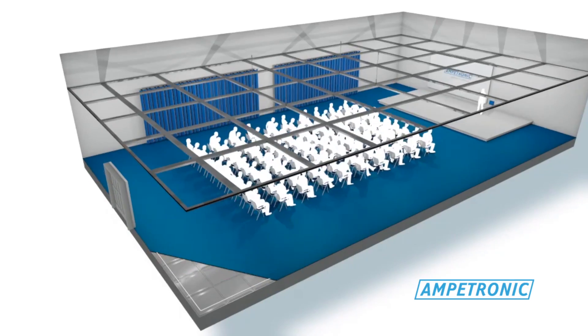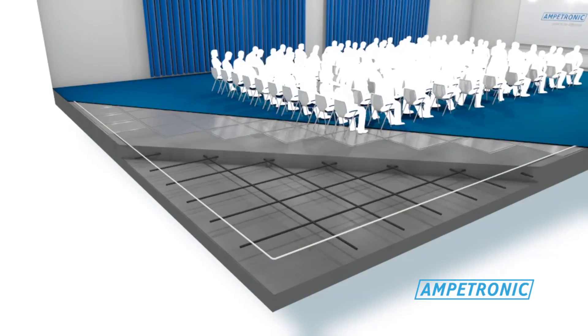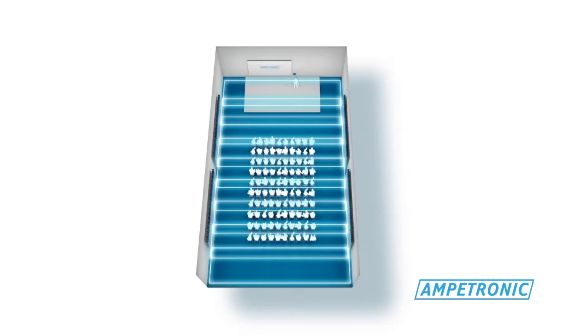You can't always use a perimeter loop around a room, as many modern buildings contain metal that absorbs the hearing loop's magnetic field.